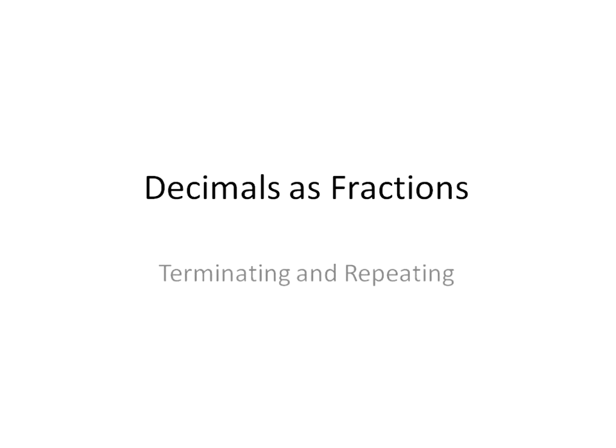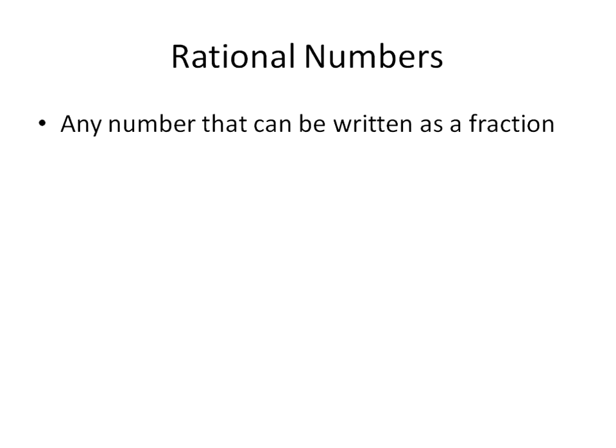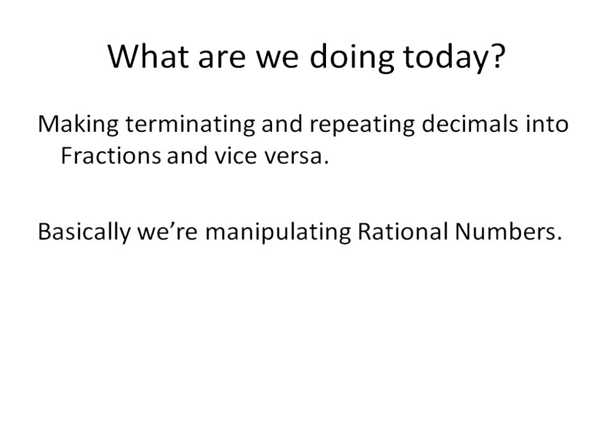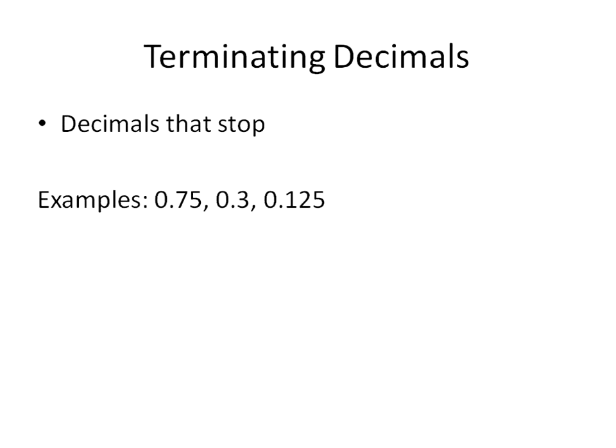Hello, this is Mr. Buffington. We're going to look at decimals and fractions today, specifically terminating and repeating decimals. Terminating and repeating decimals can always be written as a fraction, so those are known as rational numbers. Any rational number is a number that can be written as a fraction. Repeating and terminating decimals can be written that way. So what we're going to do today is convert from terminating decimals or repeating decimals into fractions and vice versa — basically working with rational numbers.